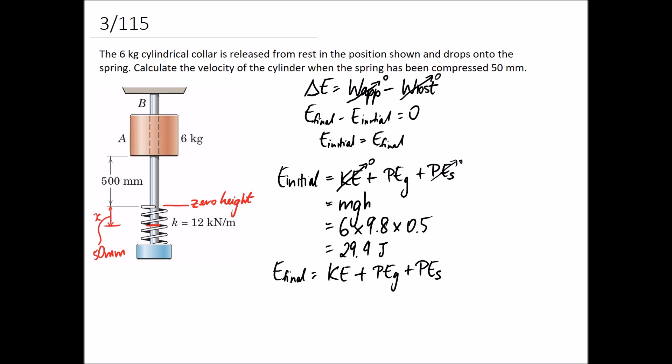Kinetic energy, at this point, we're probably going to have some because that's what we're trying to find. We can write this as a half mv squared. Potential energy due to gravity, again, this is relative to your reference point. We measure to the bottom of our block. If the bottom of our block has moved below our zero height line, we have some potential energy due to gravity, which we'll call mgh.